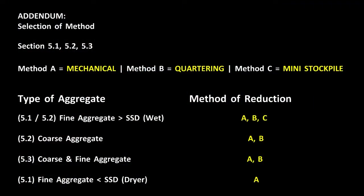Addendum for AASHTO R76: Selection of method. Method A is mechanical, Method B is quartering, Method C is mini stockpile. For fine aggregate that is greater than SSD or wet, Method A — mechanical — is the only applicable method.